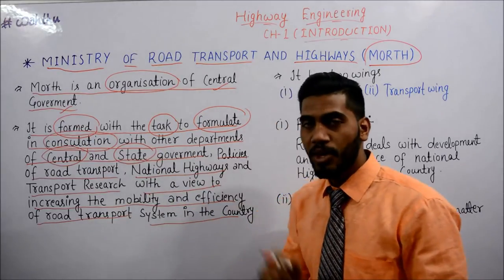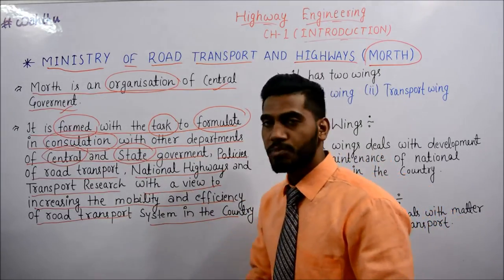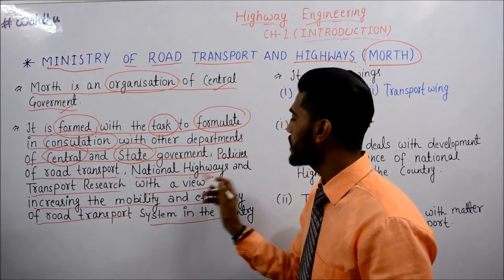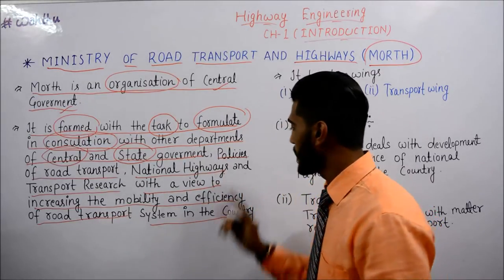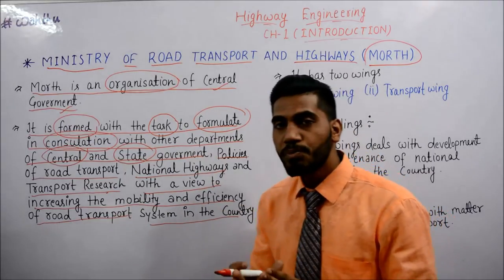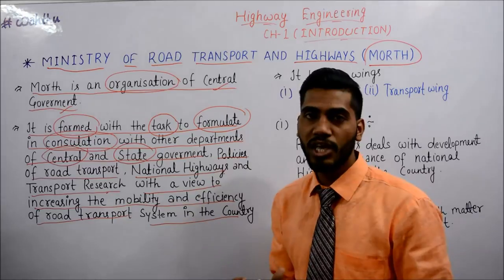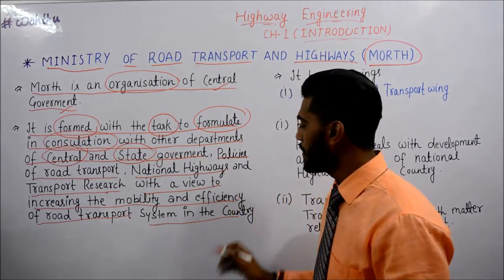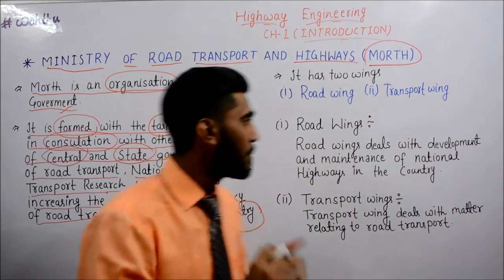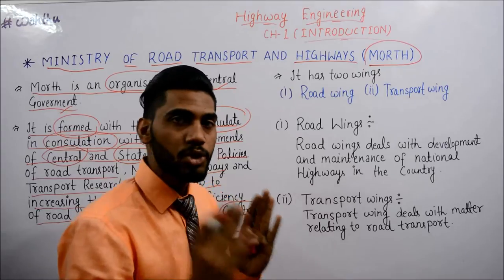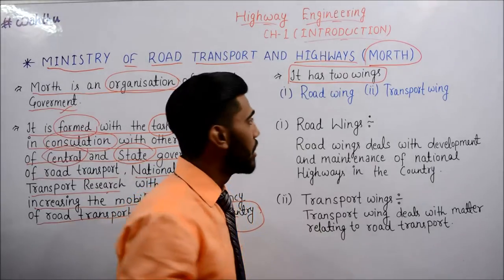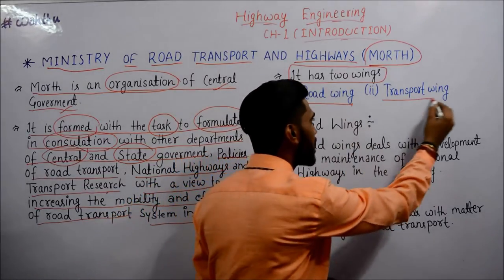इसका कार्य है: policies of road transport यानि road transport की policies बताना, national highways के बारे में बताना, और transport research करना ताकि efficiency और transport आगे बढ़ सके. अब MORTH को two wings में divide किया गया है — पहला Road Wings और दूसरा Transport Wings.